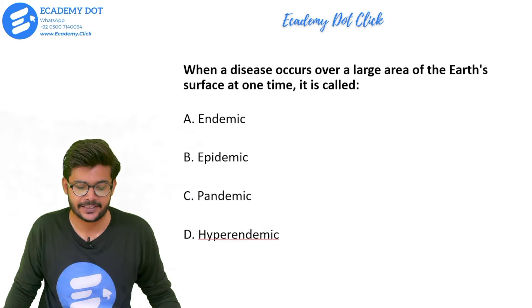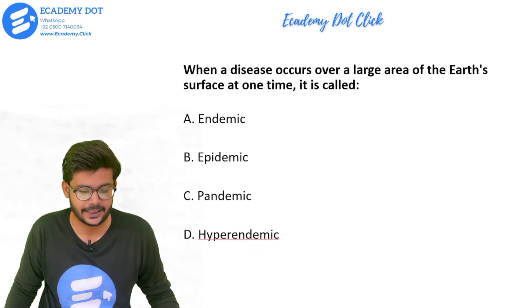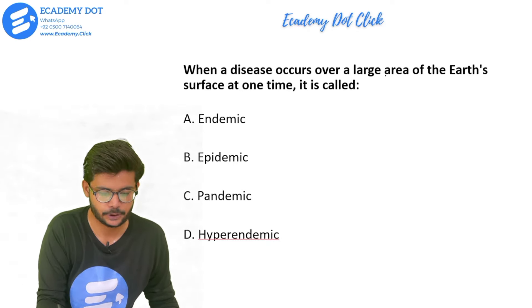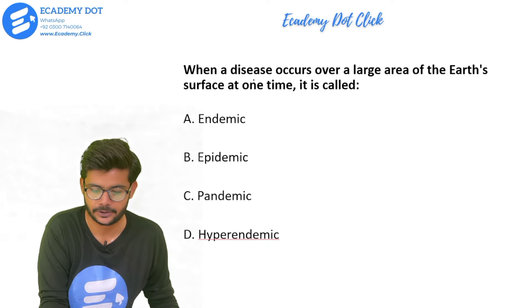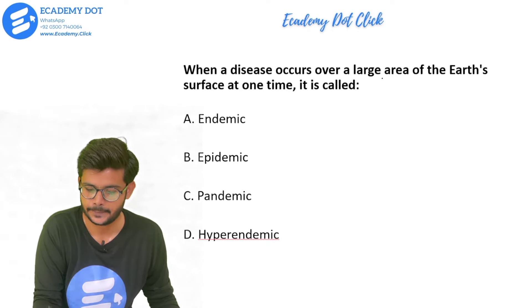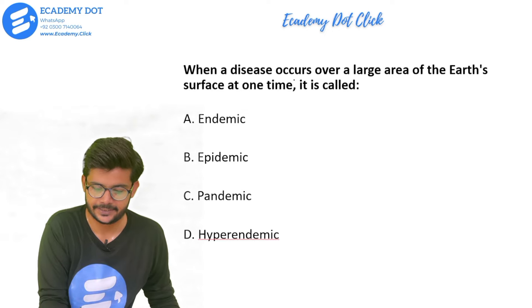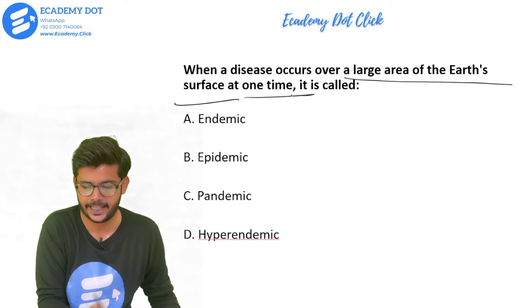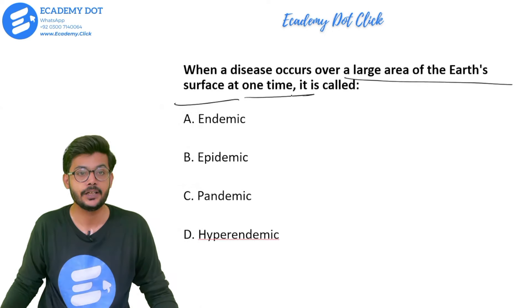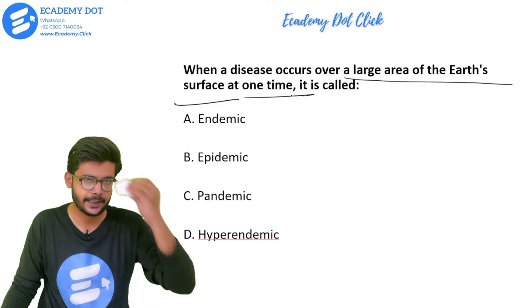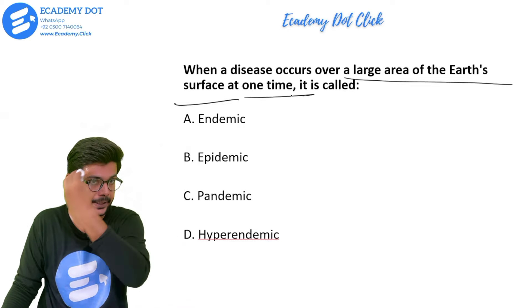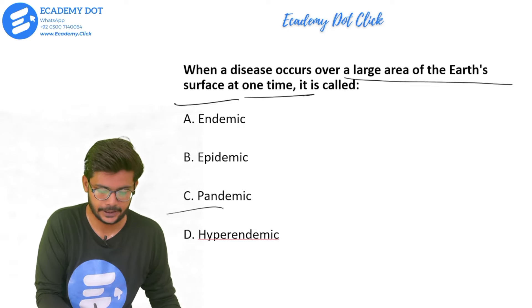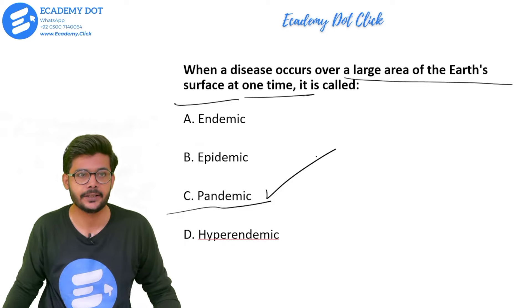When a disease occurs over a large area of the earth's surface at one time, it is called — options are endemic, epidemic, pandemic, or hyperendemic. The right answer is option C, that is pandemic.